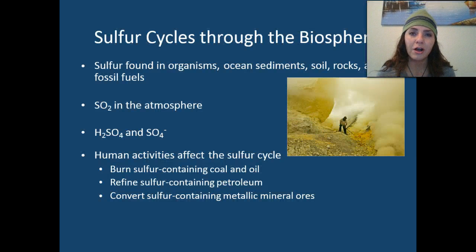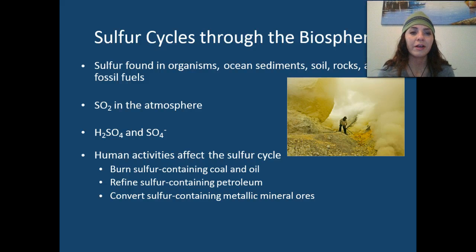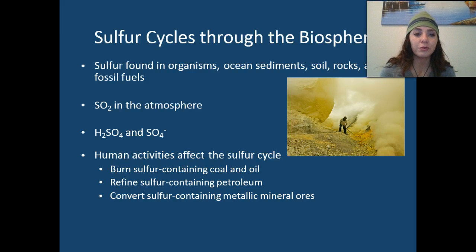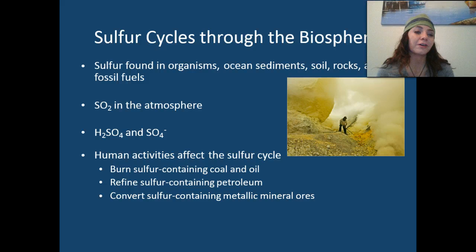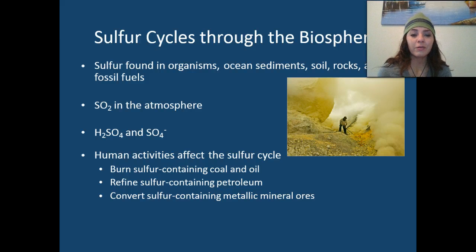Next, we're going to talk about the sulfur cycle. Sulfur cycles through the biosphere and is found in organisms, ocean sediments, soil, rocks, and fossil fuels, as well as in the atmosphere. Human activities that affect the sulfur cycle include burning of sulfur-containing coal and oil, refining sulfur-containing petroleum, and converting sulfur-containing metallic mineral ores.